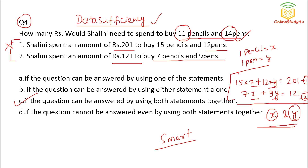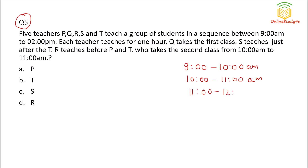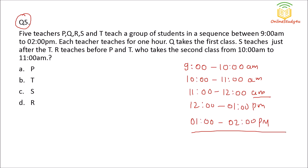Question number five: five teachers P, Q, R, S and T teach a group of students in a sequence from 9 AM to 2 PM. That means one teaches 9 to 10, one teaches 10 to 11, one teaches 11 to 12, one teaches 12 to 1 PM, and one teaches 1 to 2 PM. So five teachers each cover one time slot.